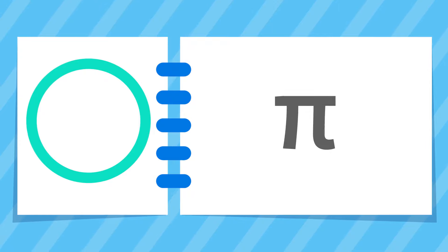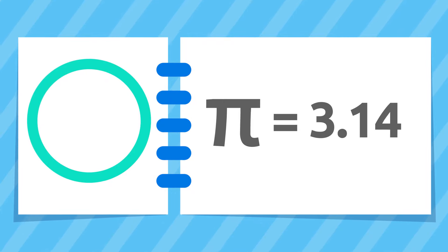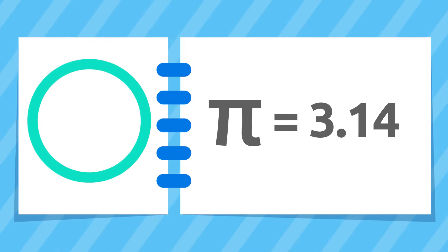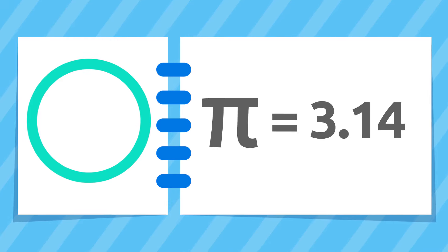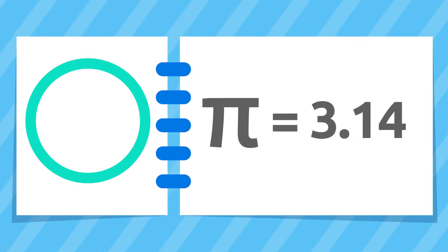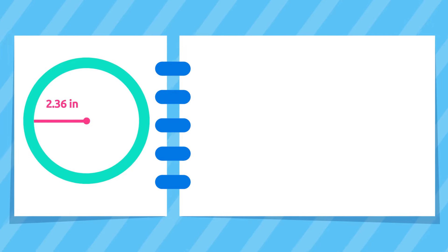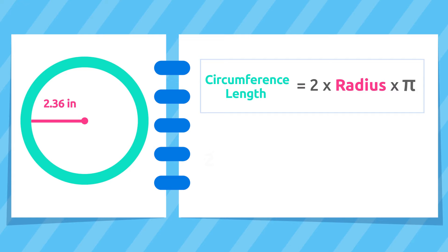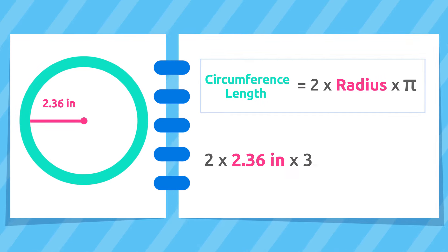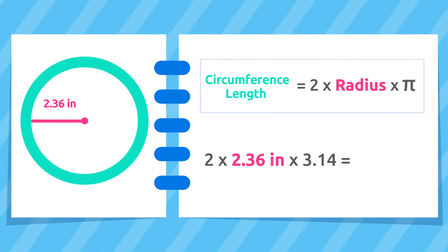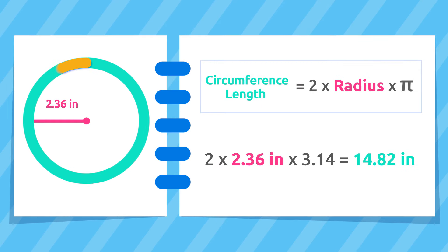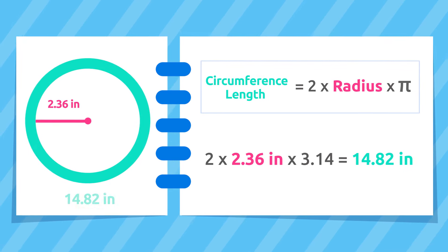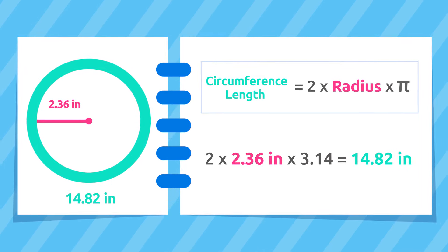Remember that pi is 3.14. We are always going to use this number. Let's look at some examples. This circumference has a radius of 2.36 inches. To calculate its length, we should multiply the radius by 2 and multiply by pi. Great! The length of this circumference equals 14.82 inches.